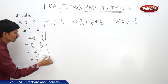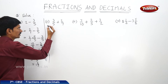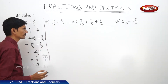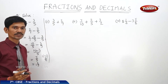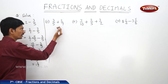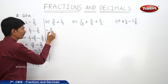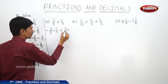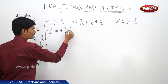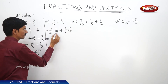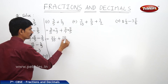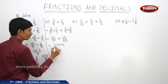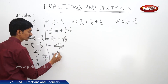Second question: 3/5 plus 2/7. The denominators are not equal, so we make them like fractions. Since 5 and 7 are prime numbers, their LCM is their product, which is 35. For 3/5, multiply by 7/7: 3×7=21, denominator 35. For 2/7, multiply by 5/5: 2×5=10, denominator 35. Now we add the numerators: 21 plus 10 equals 31/35.